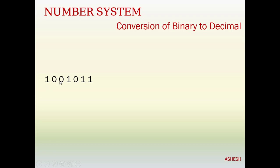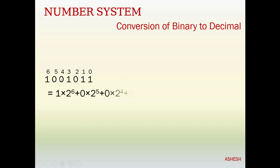Next example: binary number 1001011. Similarly, we write position numbers on top: 0, 1, 2, 3, 4, 5, 6 — from right to left, and remember we must start from 0. Some students start from 1, but you must start from 0. Now the next line: 1 into 2 to the power 6, plus 0 into 2 to the power 5, plus 0 into 2 to the power 4, plus 1 into 2 to the power 3, plus 0 into 2 to the power 2, plus 1 into 2 to the power 1, plus 1 into 2 to the power 0.